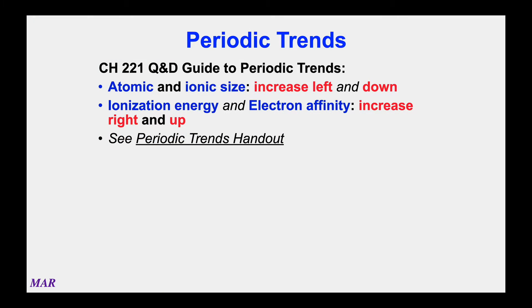The last section here we're going to talk about is called periodic trends. Periodic trends can be helpful for chemists — they help predict overall sizes of atoms and ions, and they can also be used to find ionization energy and electron affinity trends.